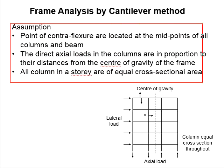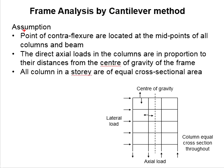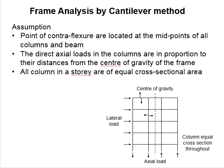There are a few assumptions related to the cantilever method. First, it is assumed that the points of contraflexure are located at the midpoint of all columns and beams. The cantilever method is used to estimate the moment acting in the beams and columns. To determine the moment acting on the members, it is assumed that there are imaginary forces acting at the midpoint of the beams and columns. The moment acting on the columns equals this imaginary load multiplied by half the beam span and half the column height.